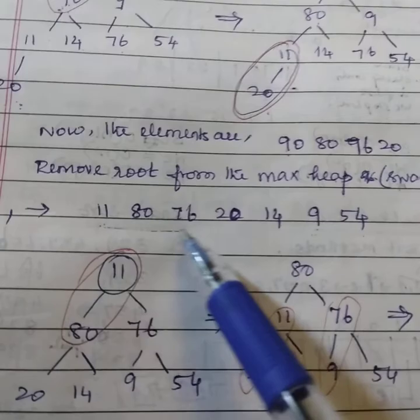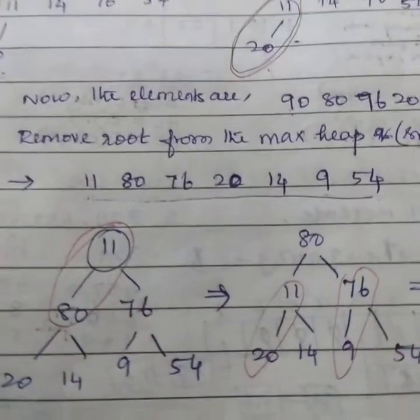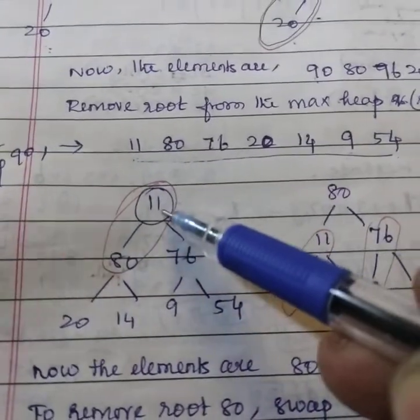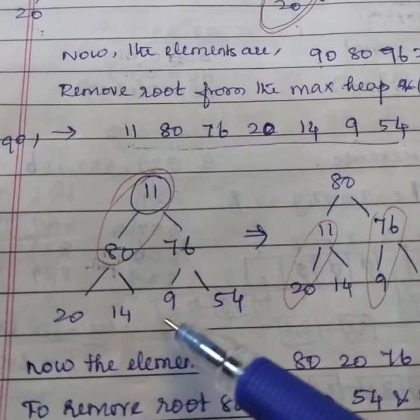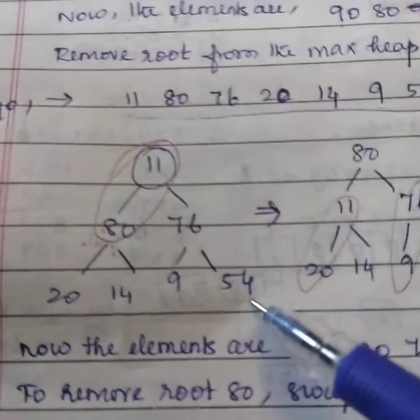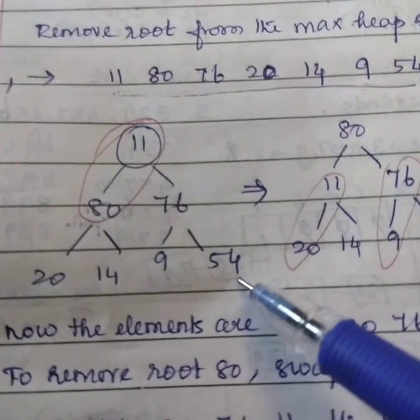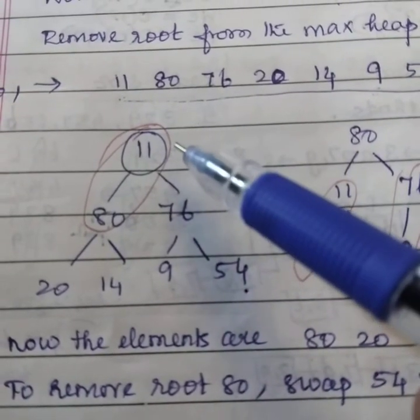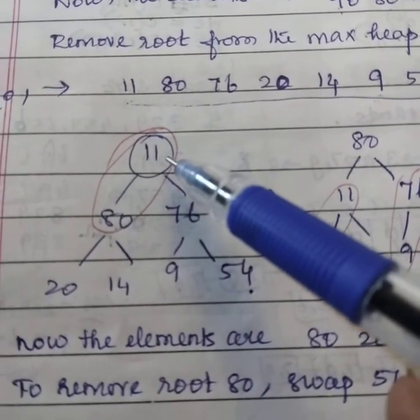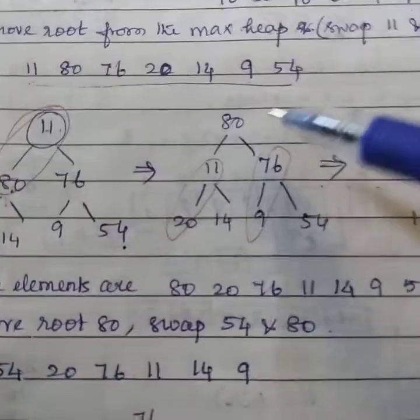Now for this list, we need to consider again a tree. 11, 80, 76, 20, 14, 9, 54. Again, we need to follow the same procedure. All parent node must have greater value. So we need to interchange these two values.